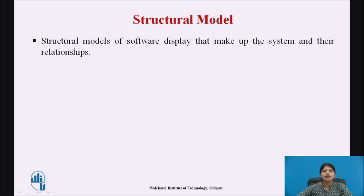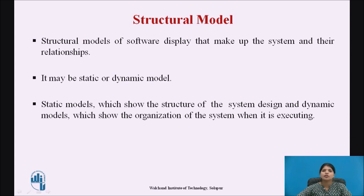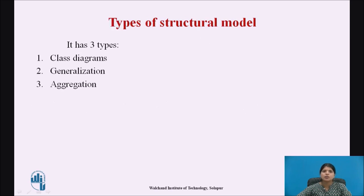Let us see first the structural model. A structural model of software displays the components that make up the system and their relationships. It may be static or dynamic. Static models show the structure of the system design, while dynamic models show the organization of the system when it is executing. Structural model has three types: class diagram, generalization, and aggregation.